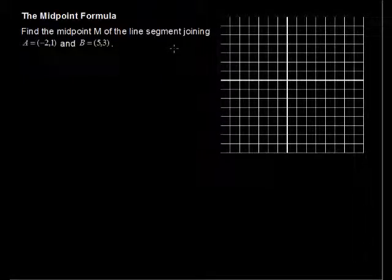In this video, we'll be talking about the midpoint formula. Find the midpoint M of the line segment joining A equals negative 2, 1, and B having the coordinates 5, 3.